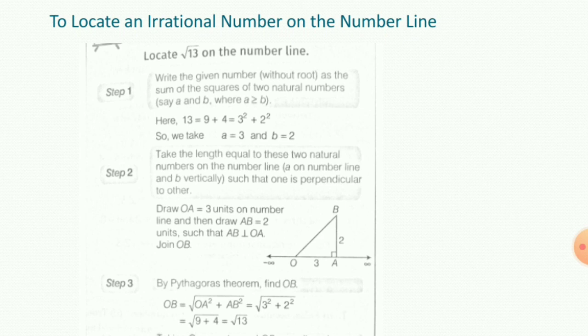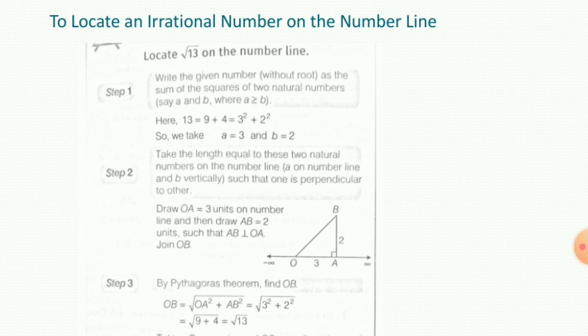Step 2: take lengths equal to these two natural numbers on the number line. Take 3 units on the number line — let it be OA. Now at point A, draw a line perpendicular to OA and mark 2 units, that is AB. So OA is 3 units and AB, perpendicular to OA, is 2 units. Now OAB becomes a right triangle. Therefore, by Pythagoras' theorem, OB squared is equal to OA squared plus AB squared, which is 3 squared plus 2 squared, equal to 9 plus 4, equal to 13. So OB squared is equal to 13.